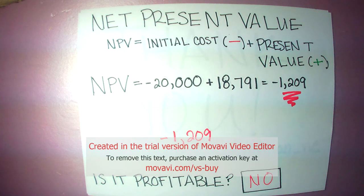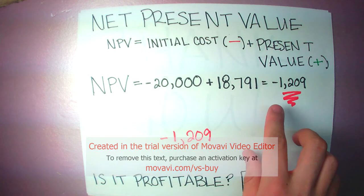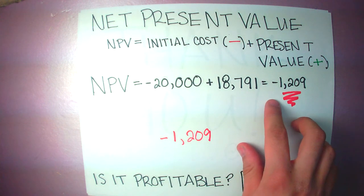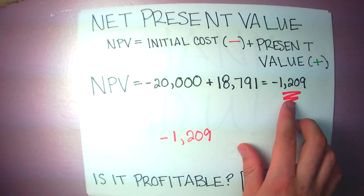In total, we can see that after everything, including the income, the maintenance, and the initial costs, we have a net present value of negative $1,209.